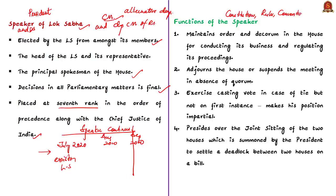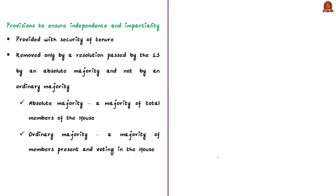Parliamentary conventions refer to residuary powers that are unwritten or unspecified in the rules. Among the speaker's duties: maintaining order and decorum in the house; adjourning the house or suspending the meeting in absence of quorum; and presiding over any joint sitting of the two houses summoned by the president — the speaker presides over the joint sitting, not the chairman of Rajya Sabha.